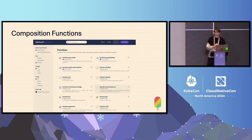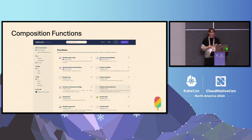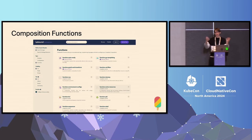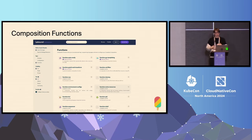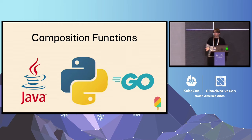In Crossplane in general, one of the exciting things in the past six to twelve months is composition functions have gone GA. This is super exciting news. You're able to create pipelines where you can use things like GoTemplating, Cue, KCL, PKL, and much more to take your observed state and create resources based off that observed state, and also bubble up errors to developers about what's going on in your cloud. You can also build your own composition function — they're based off of gRPC and a protobuf, so anything that works with gRPC, you can build a composition function with.